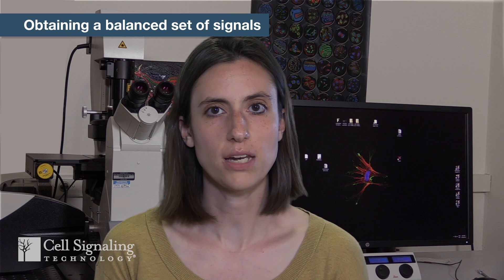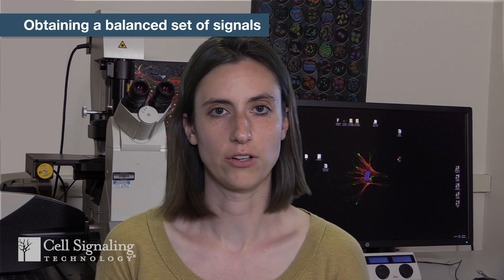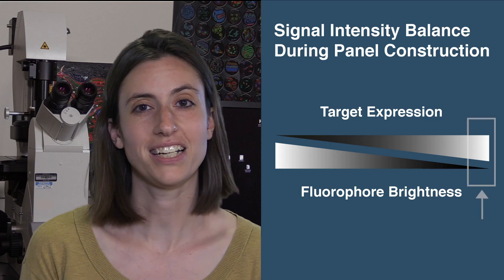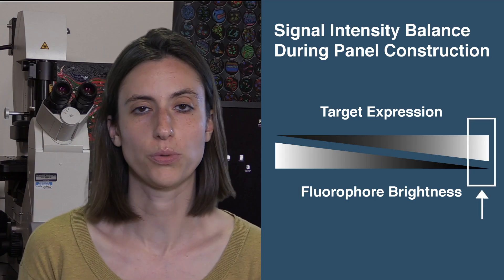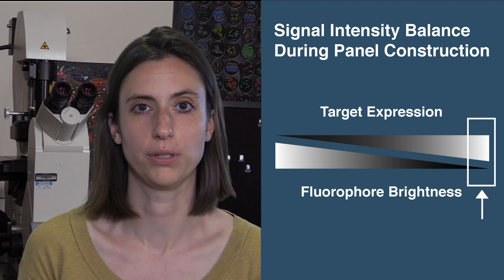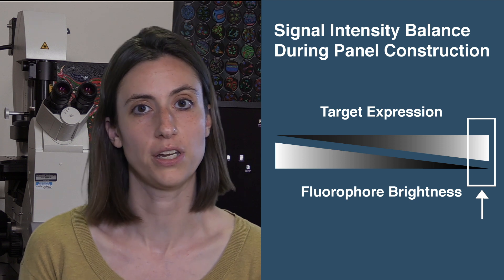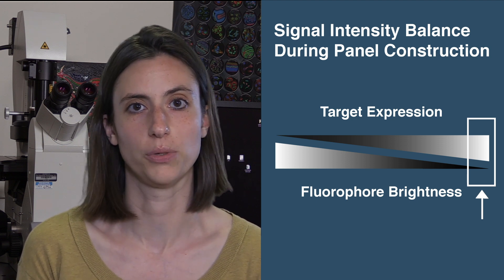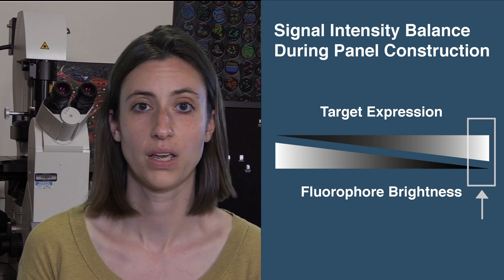Once you've determined the optimal dilution for each antibody, your next goal is to obtain a balanced set of signals. Some of the targets in your panel may be more abundant than others, and the brightness of the fluorophores in your panel can also vary. Ideally, you would want to pair the antibodies with the strongest labeling or most abundant expression of the target protein with the weakest available tyramide fluorophore conjugates.